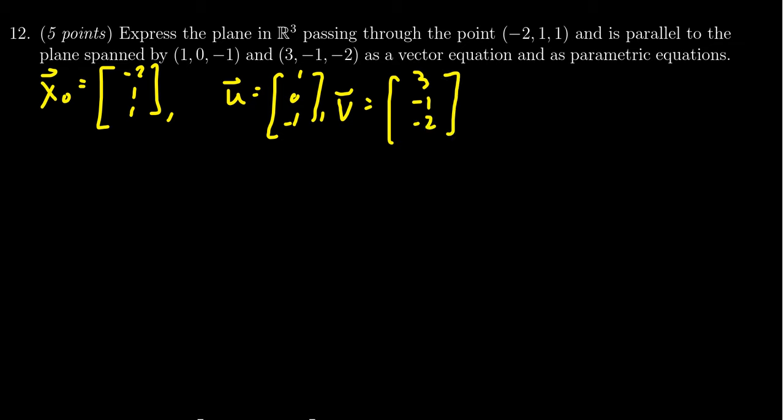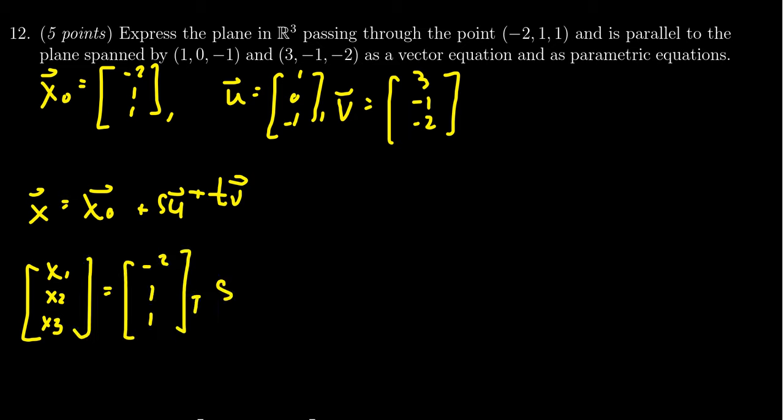So our vector equation X is basically going to look like the following. We just take X₀ plus SU plus TV, which we can expound upon. We get (X₁, X₂, X₃) equals (-2, 1, 1) plus S(1, 0, -1) plus T(3, -1, -2). And so this gives us the vector equation.